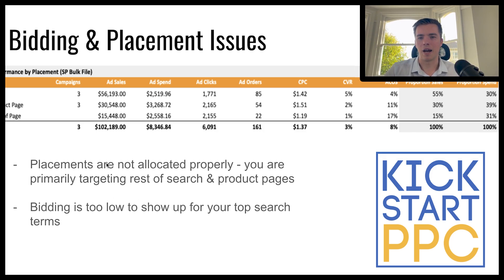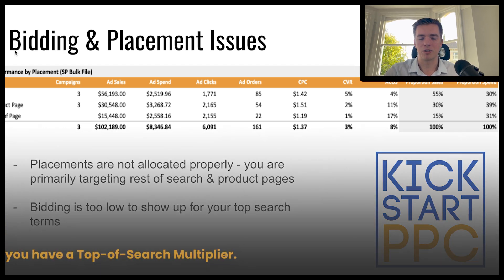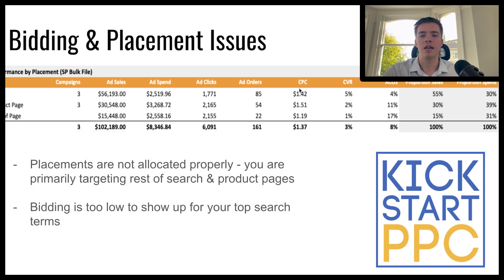When it comes to allocating your placements, you can be doing a couple of different things. Some people lower the bid and increase the placement modifier to only show in top of search, but you want to be getting all of the different placements — maybe some don't convert as well, but you want some presence in them. Showing on product pages can be beneficial too, showing up on your competitors. What I'd recommend is setting a top of search multiplier — keep your bid around the $1.20 mark, then boost top of search maybe 10 to 20% to get the right CPC. That way, you're only spending high on top of search, which makes sense because the conversion rate is much higher.